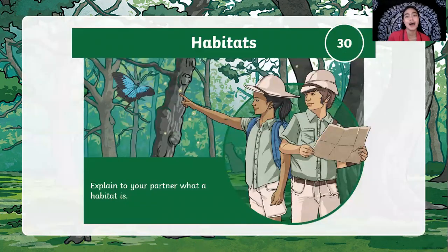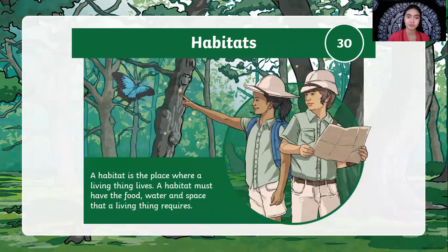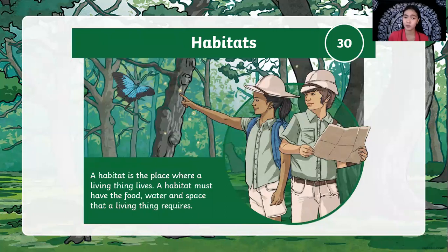Habitats — do you know what is a habitat? Last time we studied about the habitat. A habitat is a place where a living thing lives. A habitat must have the food, water, and space that a living thing requires. A habitat should provide food, water, and space for the animal to rest for it to be called a habitat.